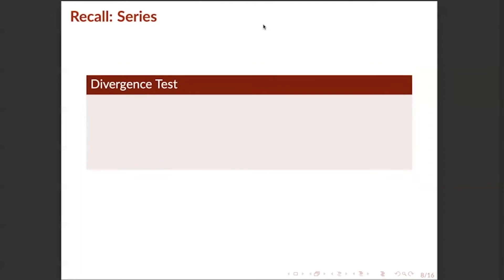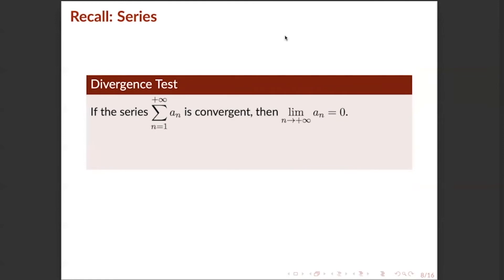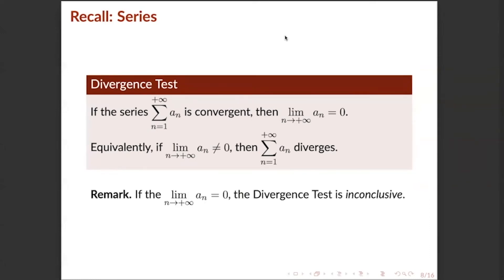Next is the recap for the divergence test. The divergence test states that if the series a_n converges, then the limit of a_n as n approaches infinity is equal to zero. Equivalently, if the limit of a_n as n approaches infinity is not equal to zero, then the series diverges. Remember: if the limit of a_n as n approaches infinity equals zero, then the divergence test is inconclusive, because not all divergent series have a limit that is not equal to zero.